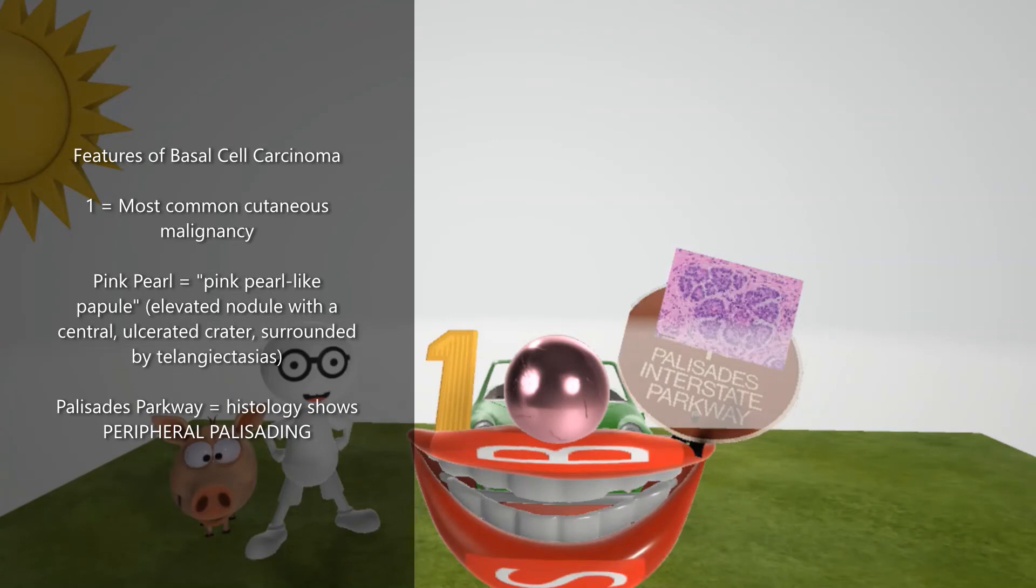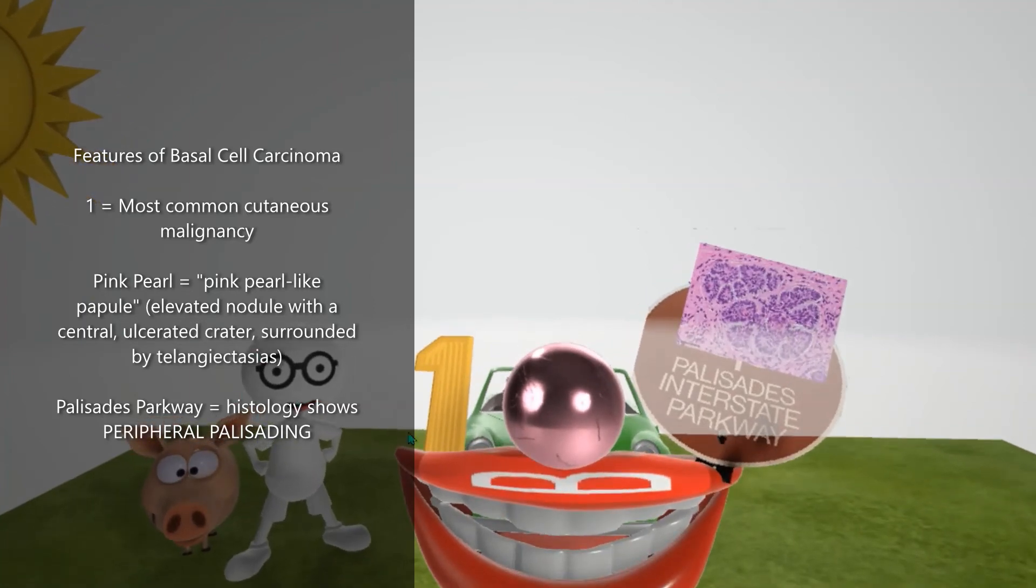We also have this pink pearl over here to help us remember the gross morphology. Basal cell carcinoma is a pink pearl-like papule. More specifically, it's an elevated nodule with a central ulcerated crater surrounded by dilated vessels. These are known as telangiectasias, and if you look closely, you'll see these vessels surrounding the center.